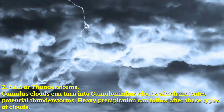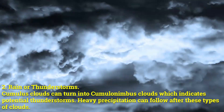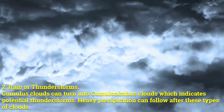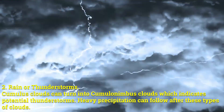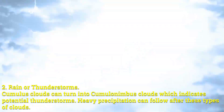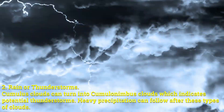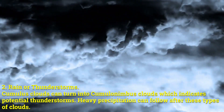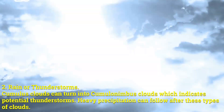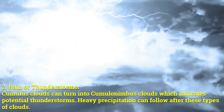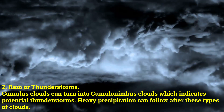Number two: rain or thunderstorms. Cumulus clouds can turn into cumulonimbus clouds, which indicates potential thunderstorms. Heavy precipitation can follow after these types of clouds.